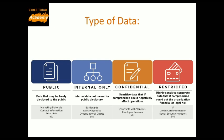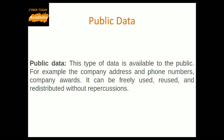Type 1 is public data. This type of data is available to the public — for example, the company's address and phone numbers, or company awards. It can be freely used, reused, and redistributed without repercussions.